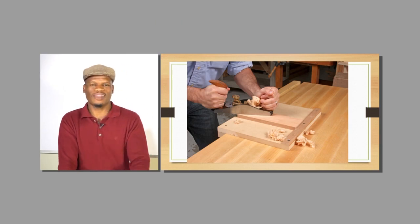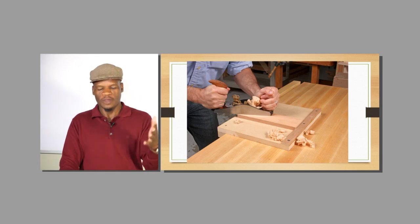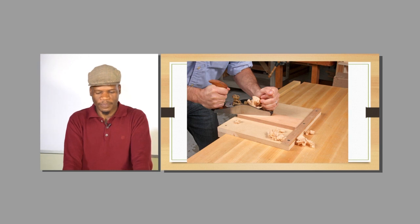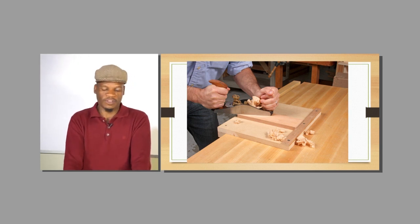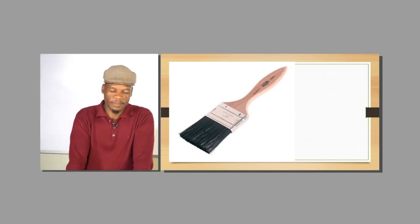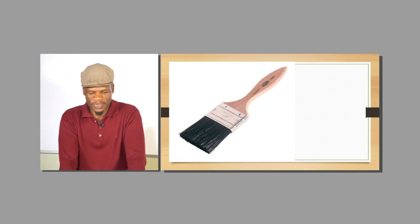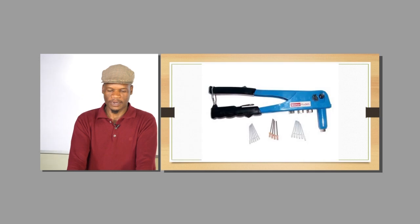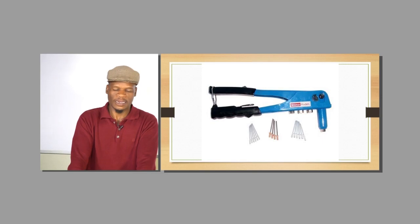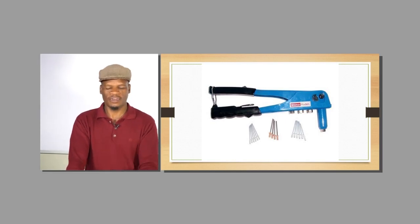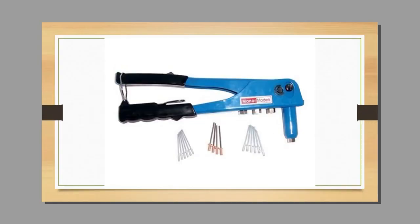You have got the planer, which is used to thickness a piece of wood — if you have to remove a little bit of material from the thickness, you use the planer. Then you have got a paintbrush, which is normally used to apply paint, varnish, or whatever type of finish you want on your material. You also have your pop rivet gun, which is used to join two pieces of metal together when a nail won't be effective.